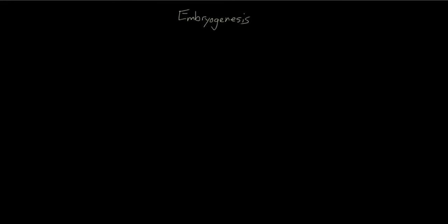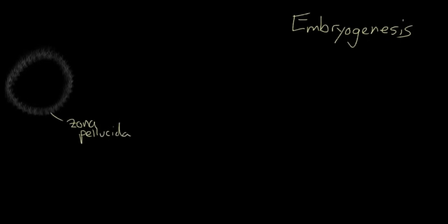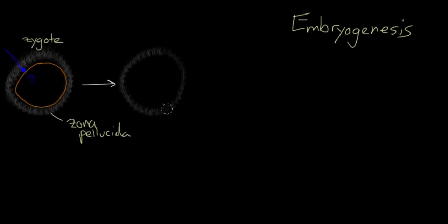We're going to talk about early embryogenesis. Say you're an egg cell and you have this nice thick outer glycoprotein coat called the zona pellucida. You've got your plasma membrane just inside of that. A sperm has made its way through the zona pellucida and managed to get in through your plasma membrane and merged its genetic material with yours. You're now called a zygote. And you'd like to go on to form an embryo, but not much is going to happen when you're stuck as a single cell. So what you've got to do is divide into multiple cells.